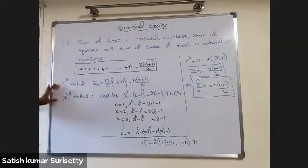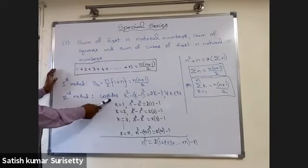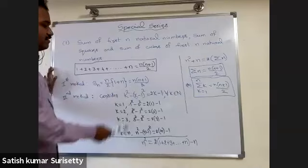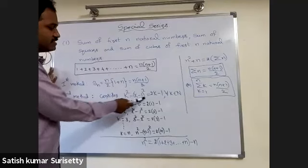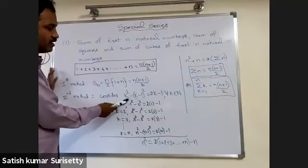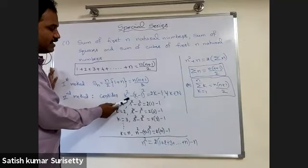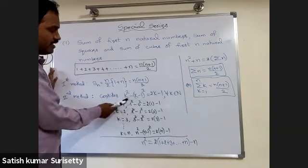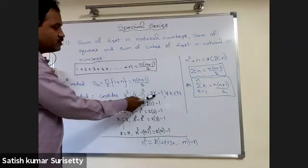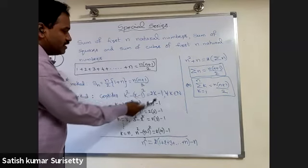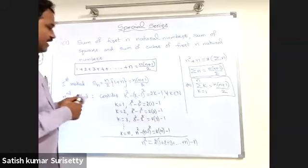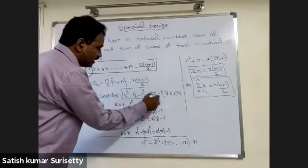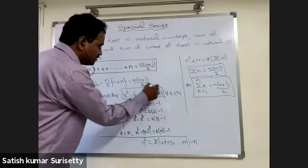Now the second method: consider k squared minus k minus 1 whole squared. This is in the form of a squared minus b squared, so I can write it as a minus b into a plus b, where a minus b is 1 and a plus b is 2k minus 1.